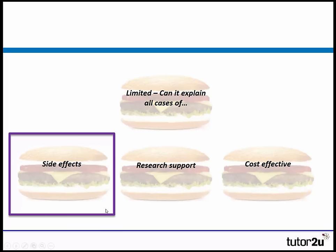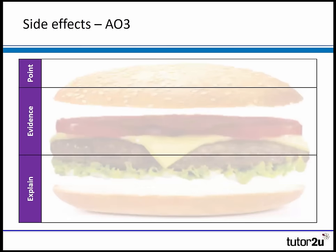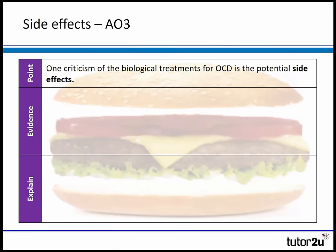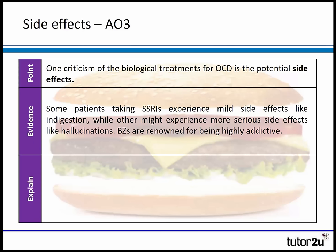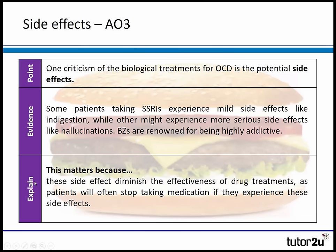Let's start with side effects — this can apply to all the different treatments. One criticism of the biological treatment of OCD is the potential for side effects. Some drugs like SSRIs have mild side effects like indigestion, whereas other people get more serious side effects like hallucination. Benzodiazepines, once called the 'chill pill,' are really addictive drugs. This matters because side effects reduce the effectiveness of drug treatment — people often stop taking their drugs and therefore relapse.